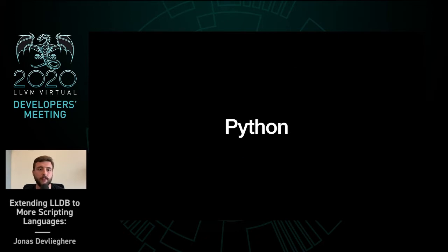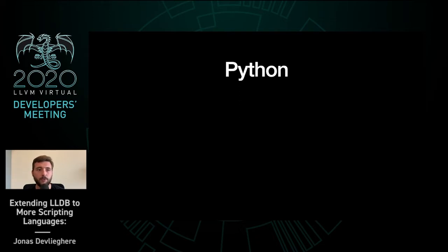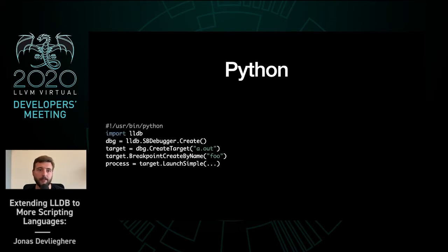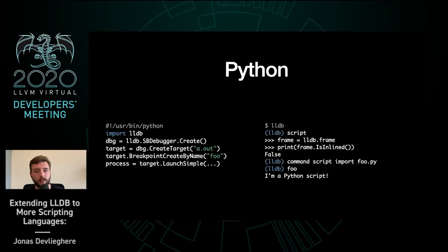Python is LLDB's main scripting language. There are two ways to script the debugger. One option is to use LLDB from Python to drive a non-interactive debug session, allowing you to leverage all of LLDB's functionality to write custom standalone debugging tools. A lot of tooling — from binary instrumentation and automated bug triage to reverse engineering — is built on top of LLDB's Python API. The alternative is to use Python from within LLDB to process data or extend its functionality through custom commands and formatters.